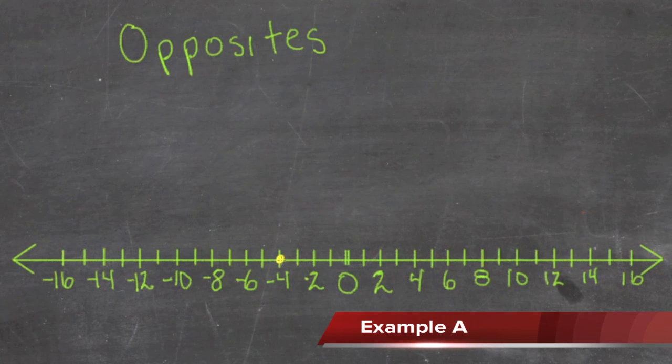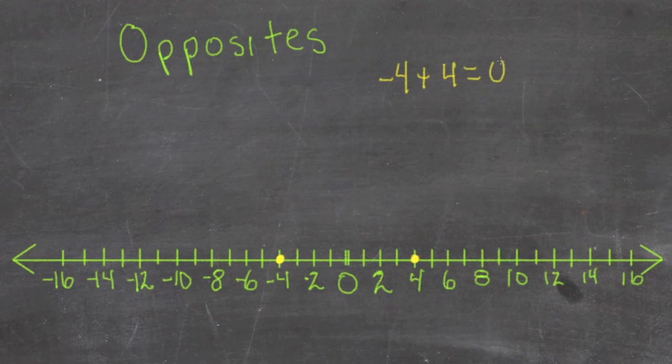So if we look at, say, negative 4 and positive 4, those two numbers are opposite. That's because negative 4 plus 4 equals 0. Any time two numbers add together to be 0, they're opposites.